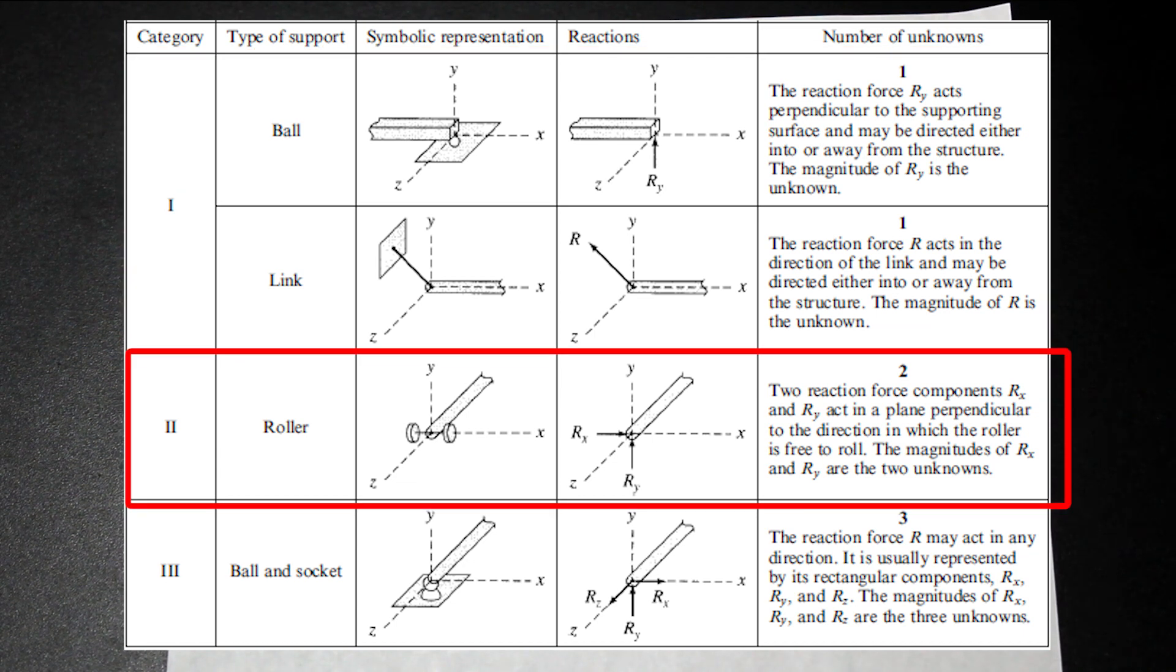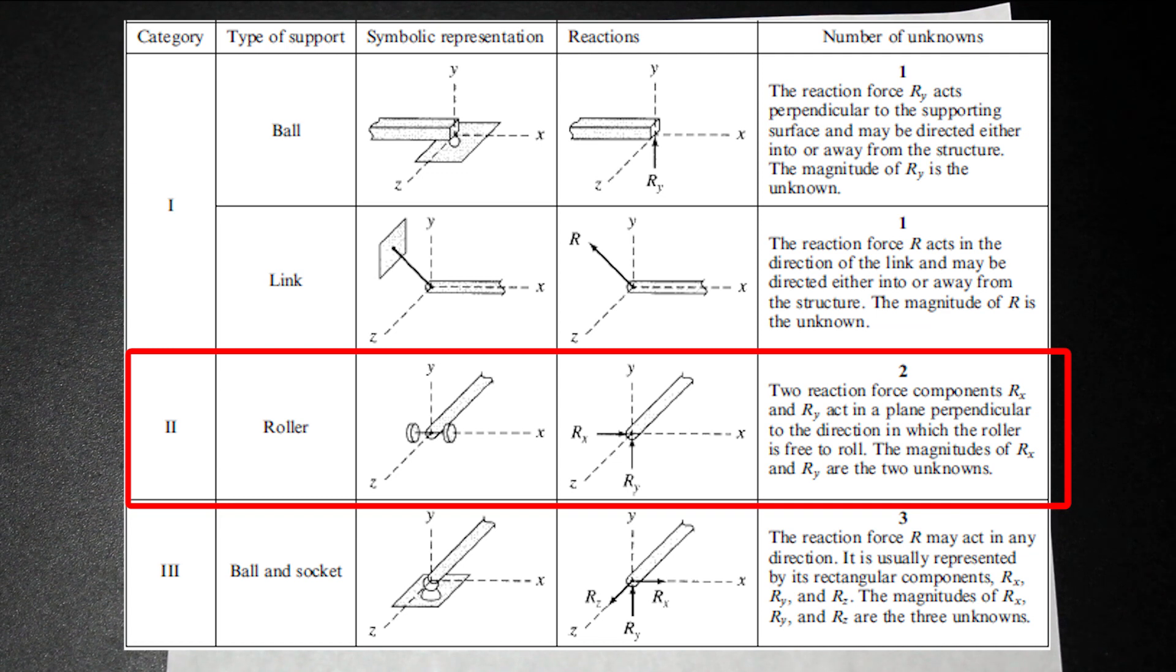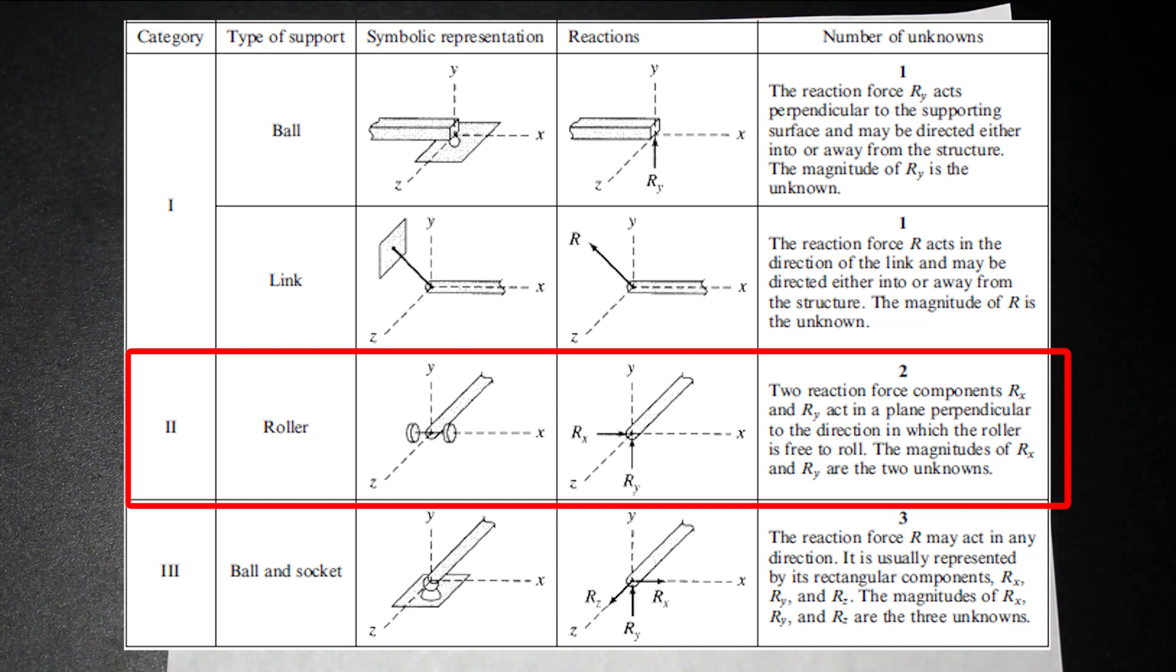If we have a roller in category two, we're going to have two reactions. We're going to have a reaction in X and we're going to have a reaction in Y, but in Z, the translation is not restrained. So the member is free to move in Z.